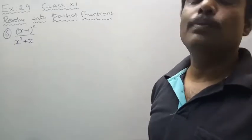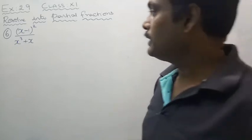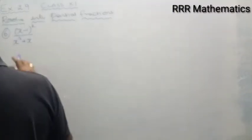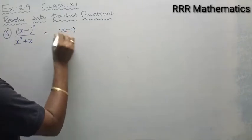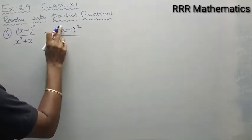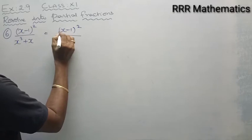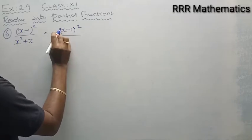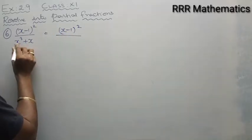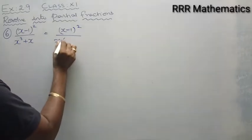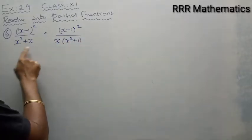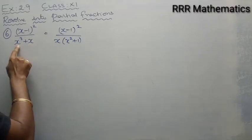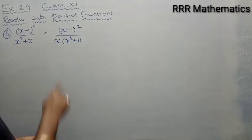We have (x minus 1) whole square divided by x cube plus x. The denominator is x cube plus x. When you factorize, take x common: x into x square plus 1. So I can write x cube plus x as x times x square plus 1.